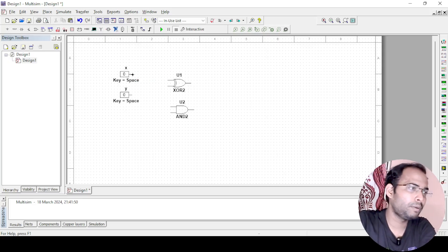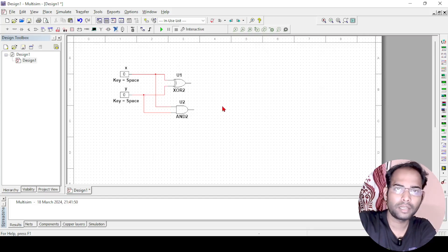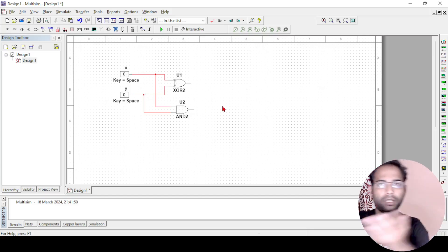Now how the connection will be made? So from x, one connection is to the XOR gate and another input of the XOR gate will be here from the y, and next to the AND gate, the same inputs will be given. So I will just connect it here in the existing lines. Now this circuit is complete, next what I need, I need a probe to see whether the output is there or not.